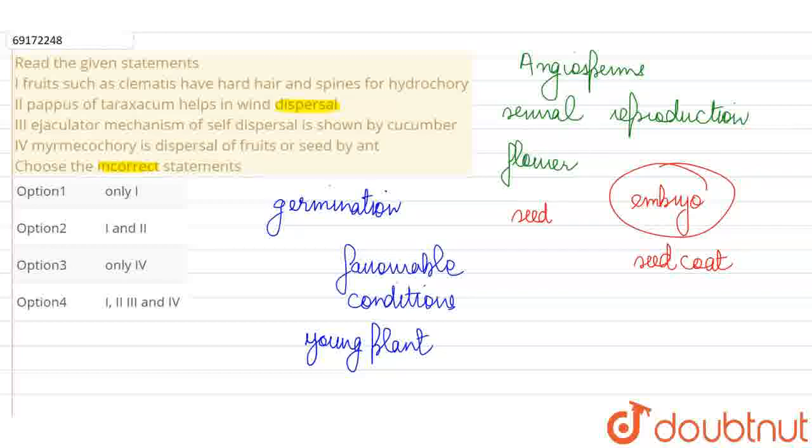So seed dispersal is such a process where different types of mechanisms or different agents are used by the plant to disperse seeds from the parent plant. To such places where there are proper resources and space available for growth. And this mechanism of seed dispersal can vary.